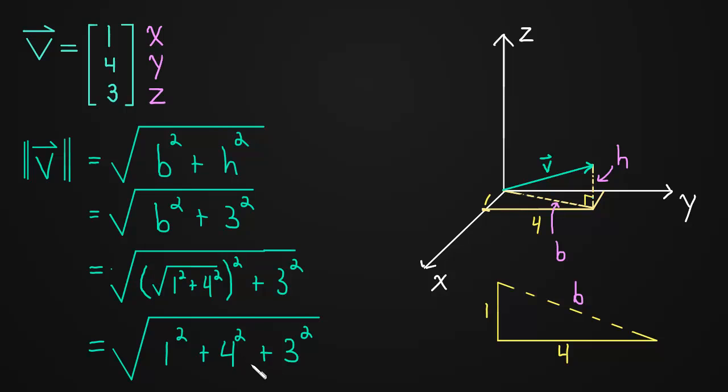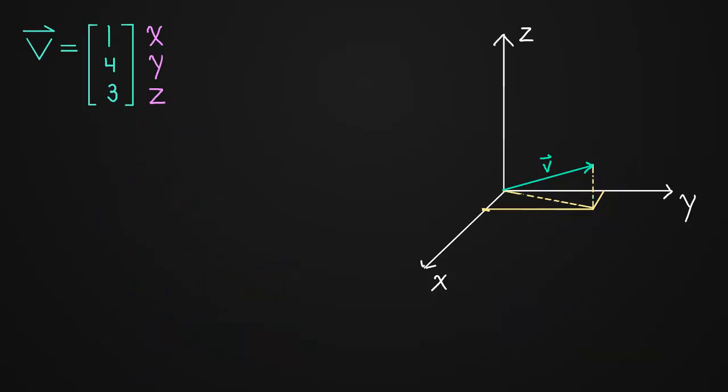Let's do another example. Let's say we have u is equal to, I don't know, one, negative six, four. What is the length of u?